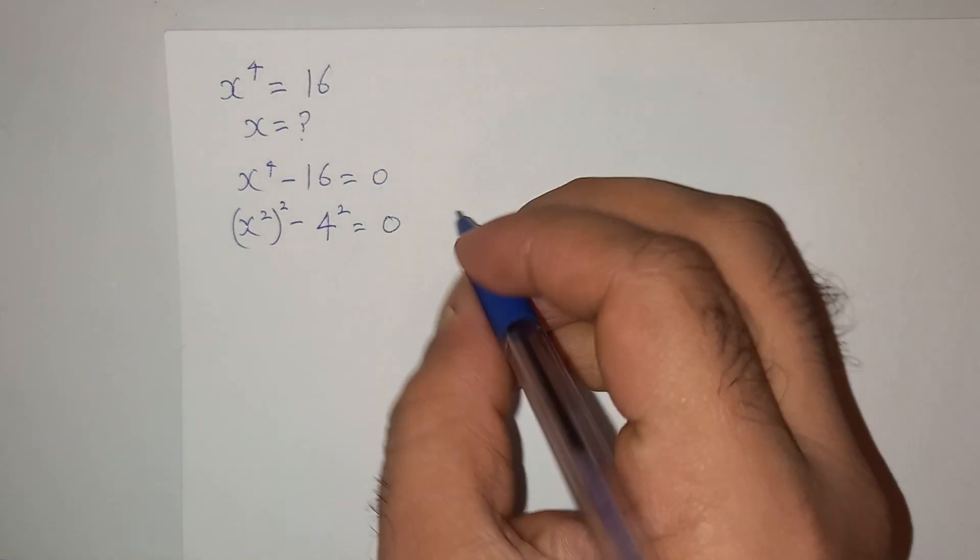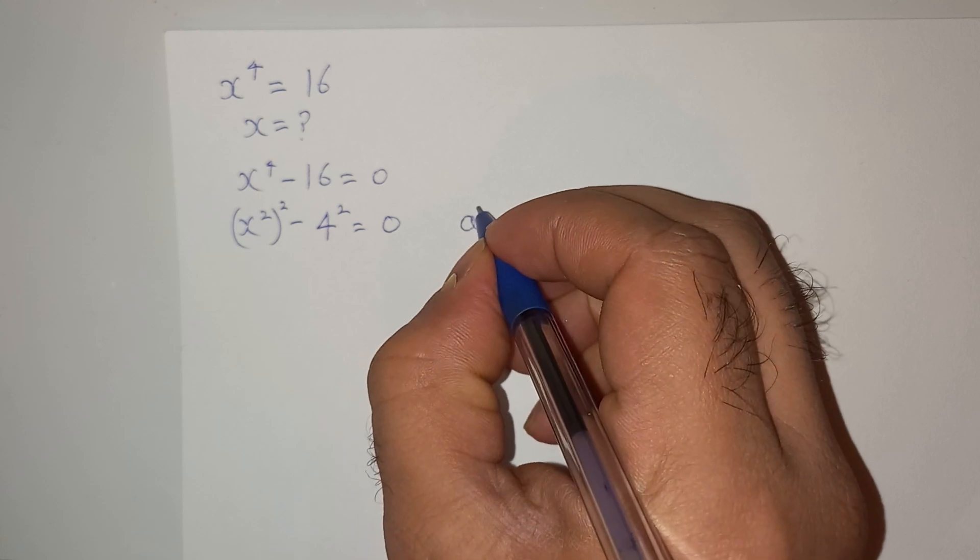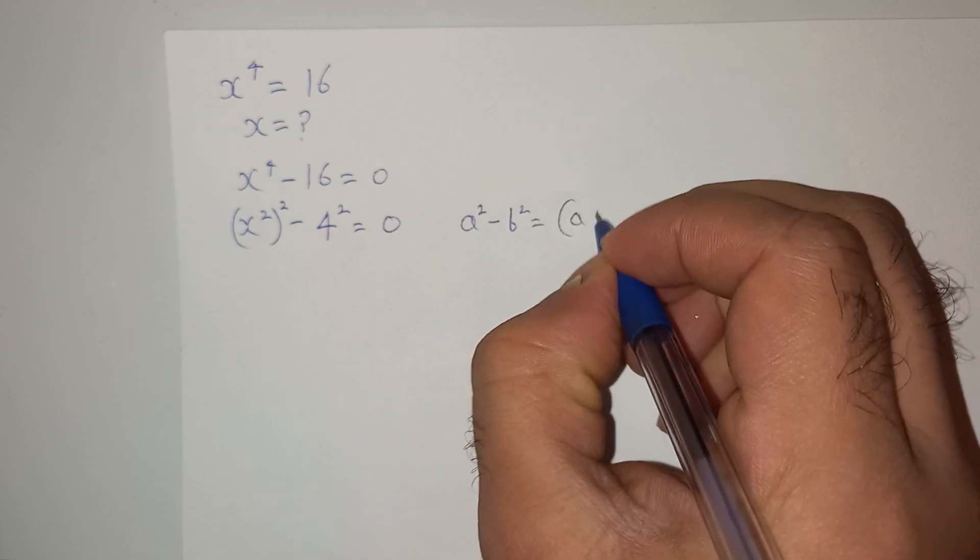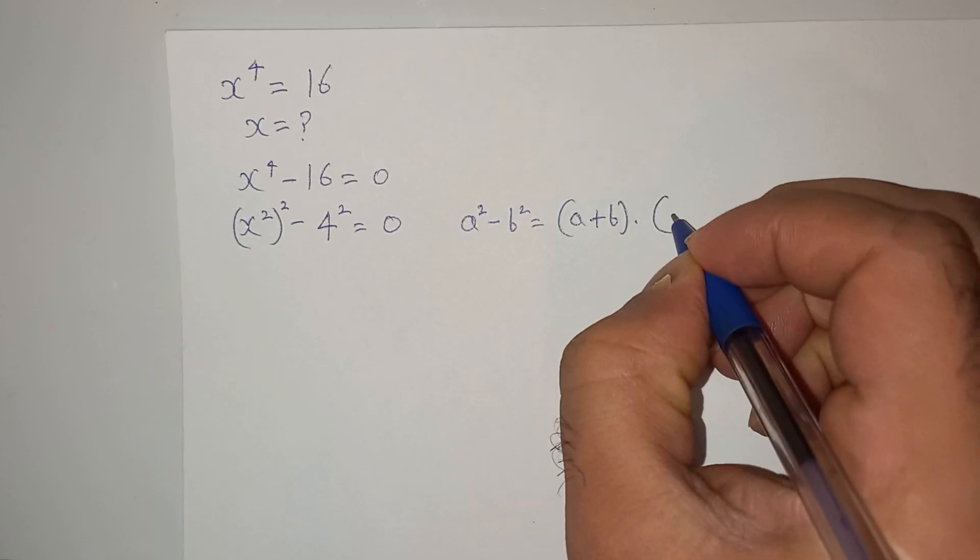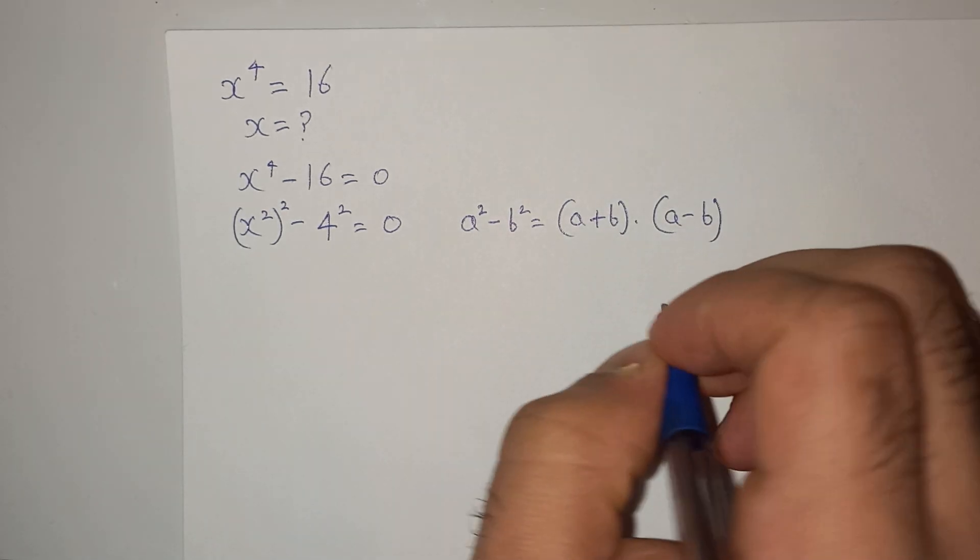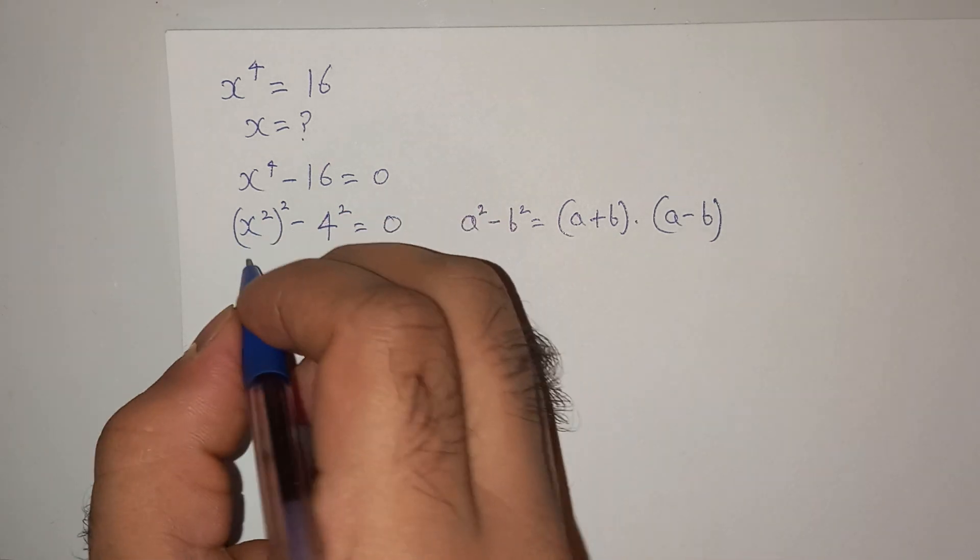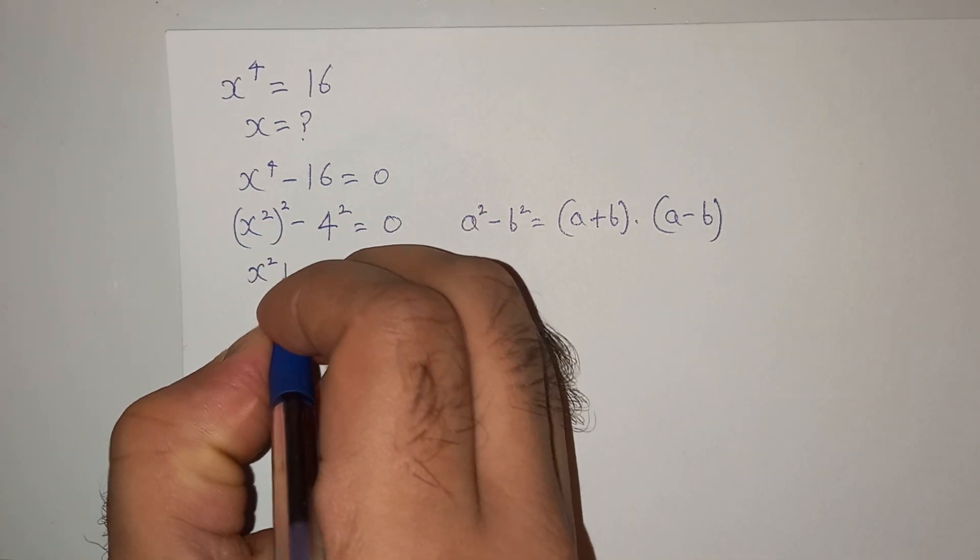As you can see, this is the basic formula which is a square minus b square equals a plus b multiplied by a minus b. So as per this formula, this is going to be x square plus 4 multiplied by x square minus 4 equals 0.